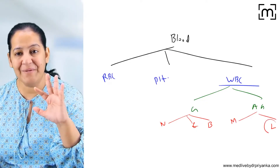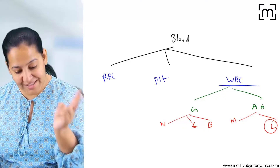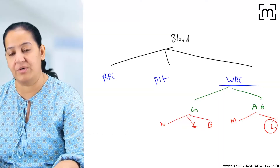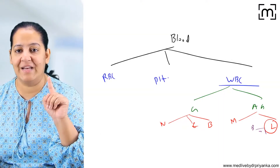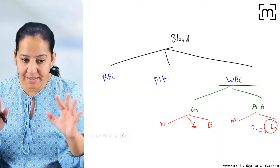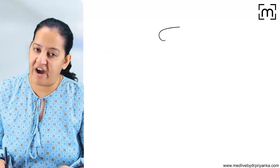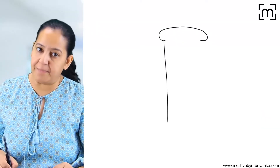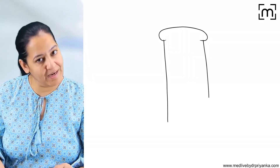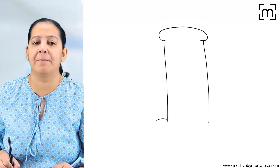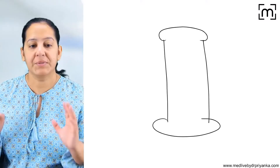I am interested in the lymphocyte. Lymphocytes are further of two types — B lymphocyte and T lymphocyte. All these cells, including all five types of WBCs, RBCs, and platelets, are formed in the bone marrow.